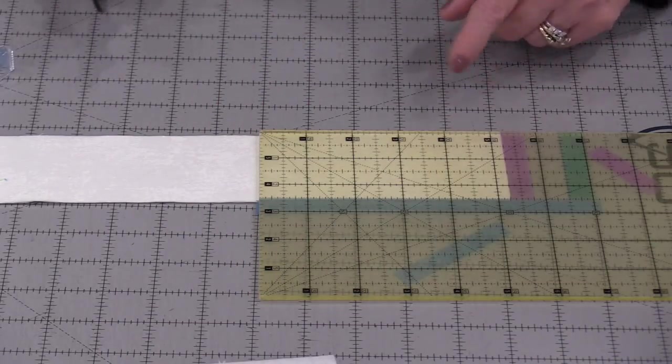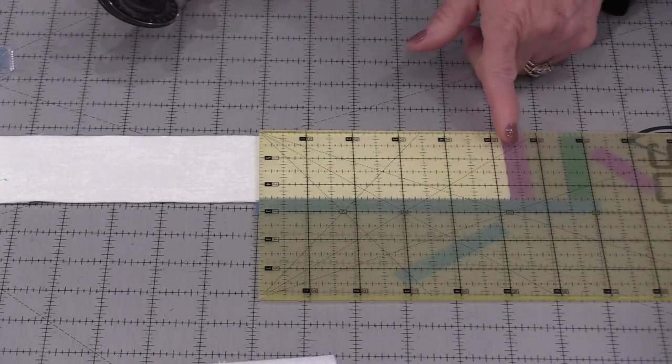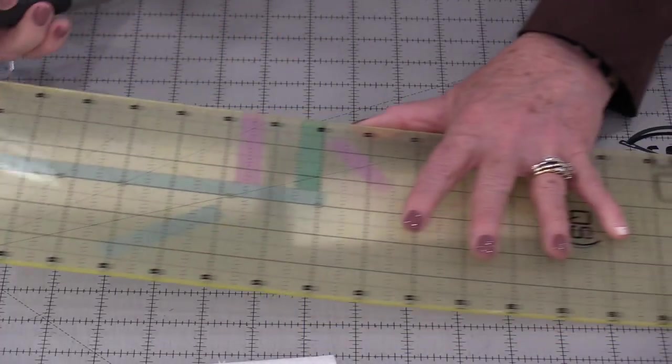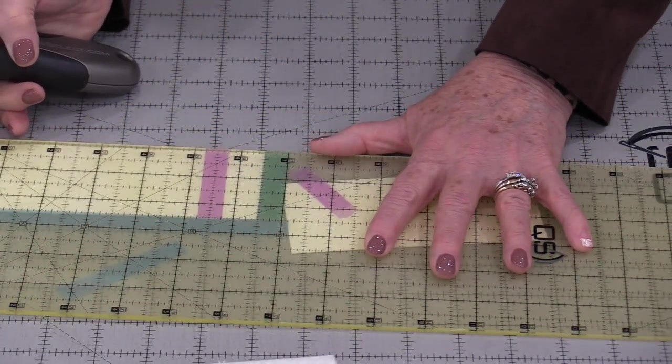I already have my strips cut at 2½″. Now I don't need to count on the ruler. I could do my one cut, move my ruler for my second cut.